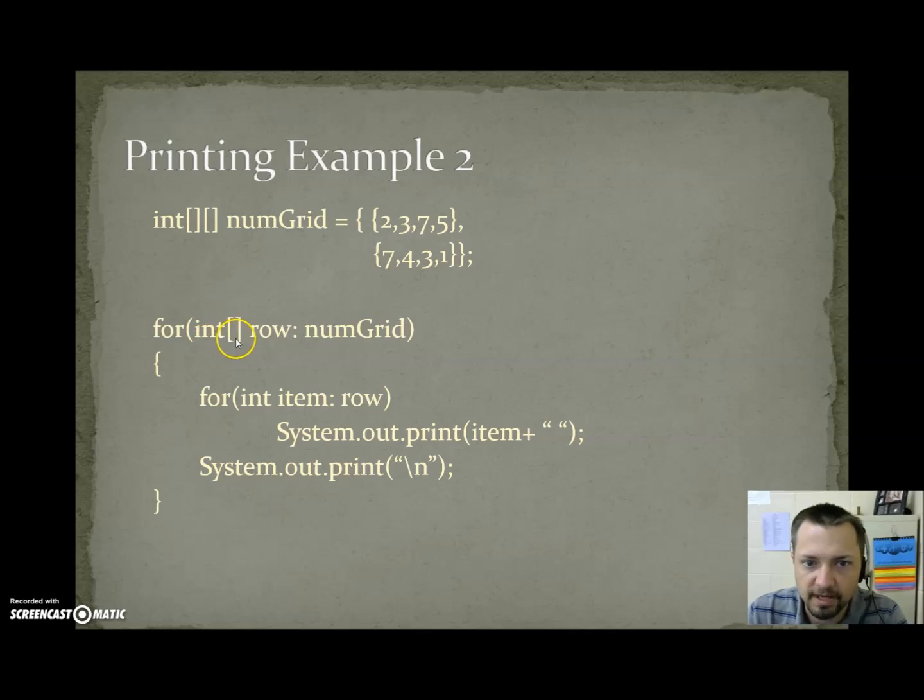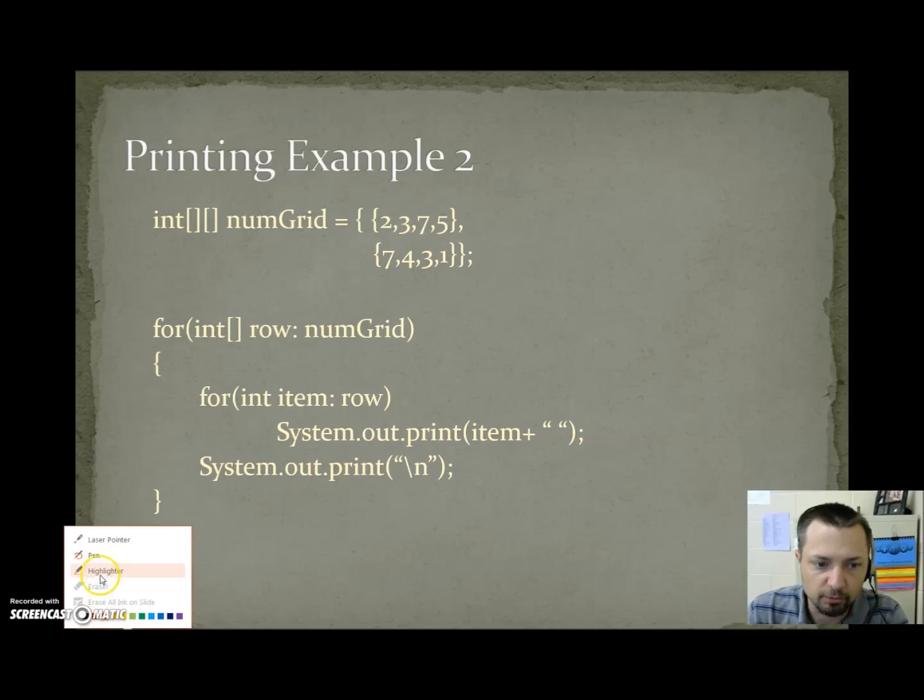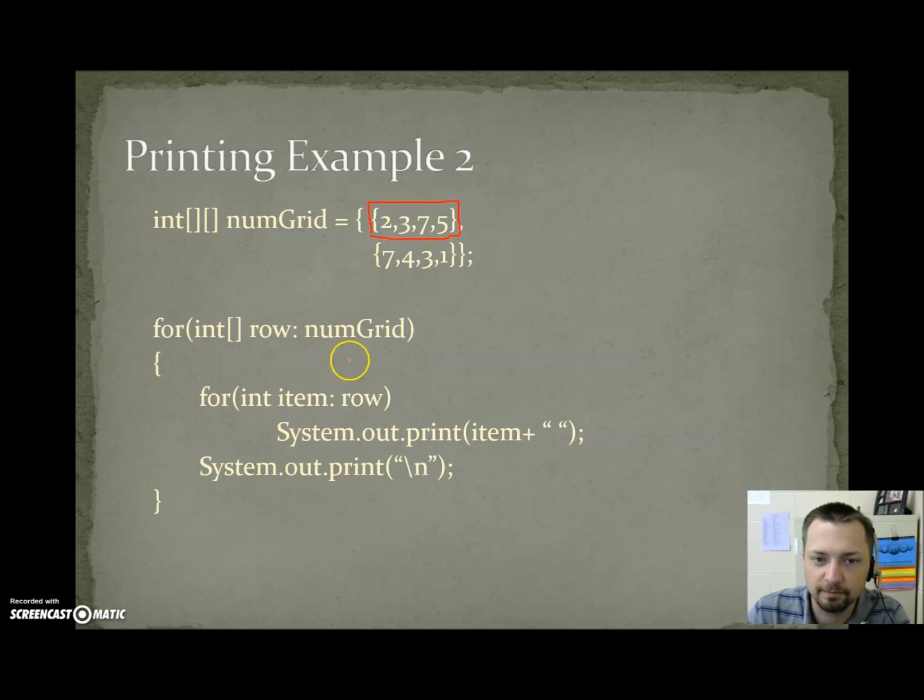So here when we say int bracket bracket row colon numGrid, what we're saying is we're going to go through every row in numGrid. And each time we'll call that row, row. So the first time this loop executes, we grab 2, 3, 7, 5. Int item colon row. We go through every item in the row, calling it item. And by the way, it's in type int, because we have an int array. So when this goes through, it prints 2, space, 3, space, 7, space, 5. Then it runs out of data, so it stops, moves, next line. Now the cursor is sitting here.